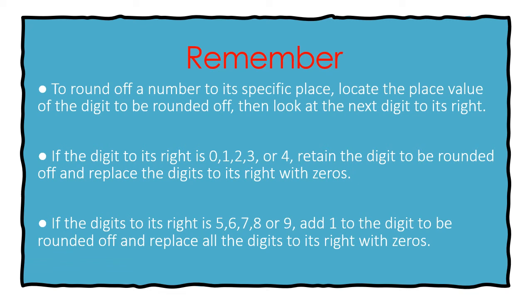If the digit to its right is 5, 6, 7, 8, or 9, add 1 to the digit to be rounded off and replace all the digit to its right with zeros.